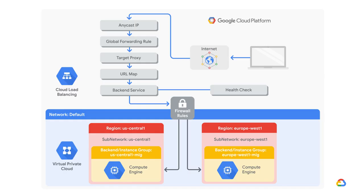Specifically, you create two managed instance groups that serve as backends in US Central 1 and Europe West 1. Then you create and stress test a load balancer to demonstrate global load balancing and autoscaling.